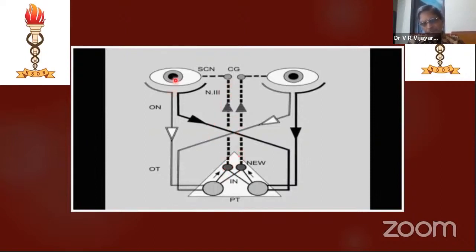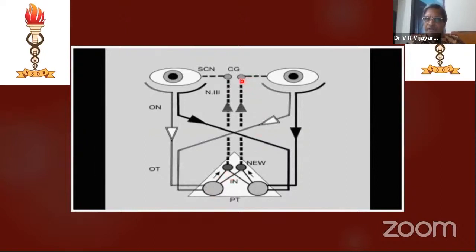From the retina, optic nerve, chiasma, tract, and pre-tectal nucleus up to the Edinger-Westphal nucleus — these are all called the afferent pathway. A problem occurring in the optic nerve, in the tract, or in the pre-tectal nucleus up to the Edinger-Westphal can produce problems in the pupil. These are all called afferent defects.